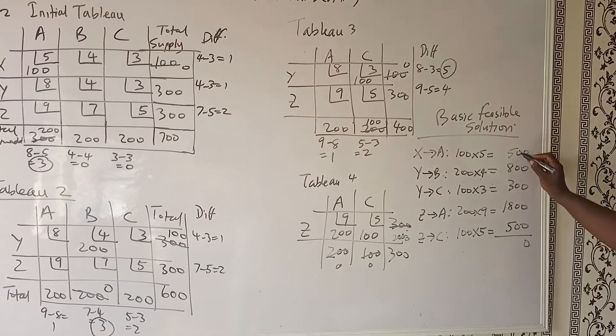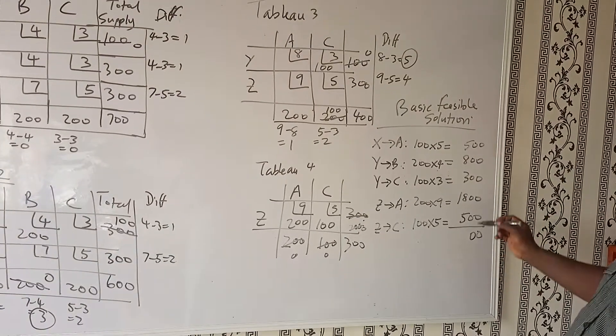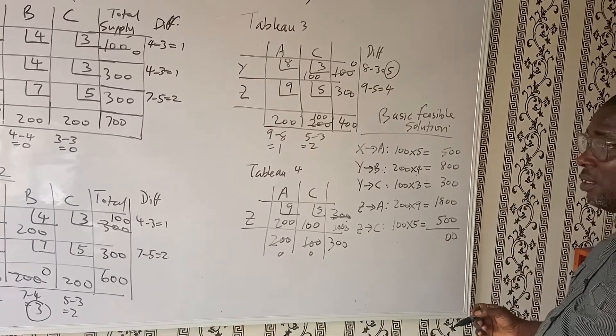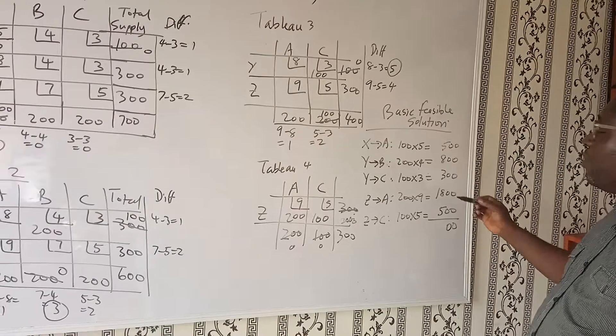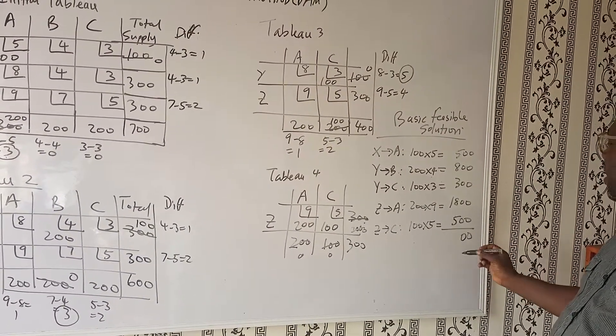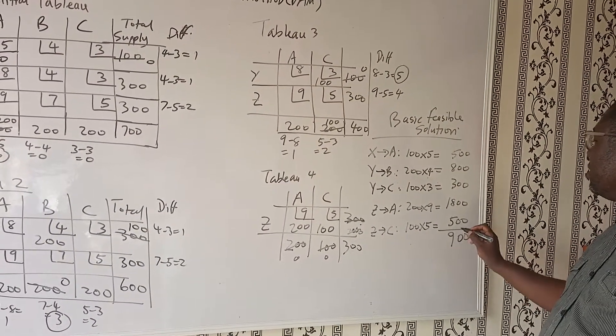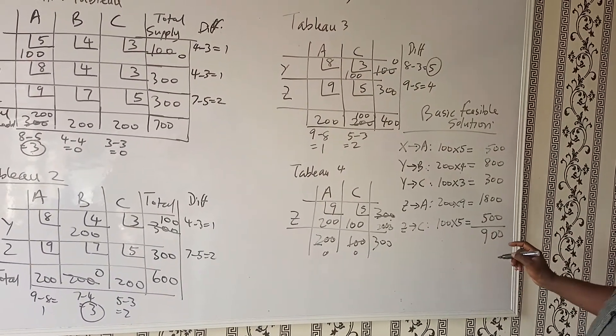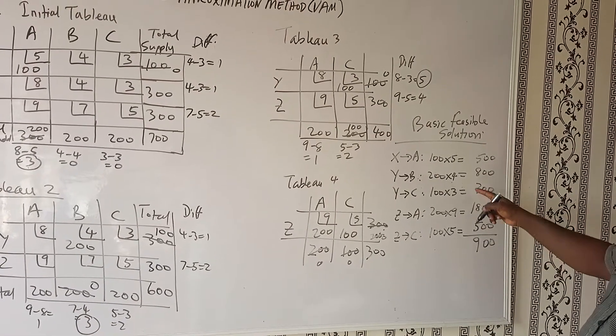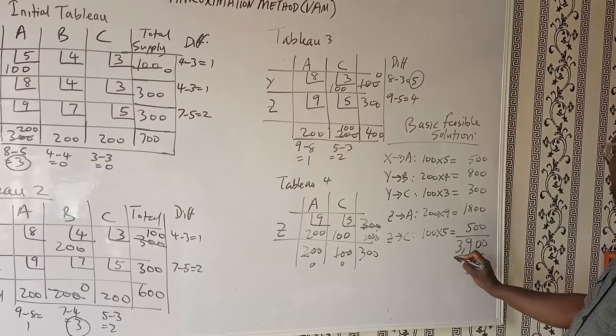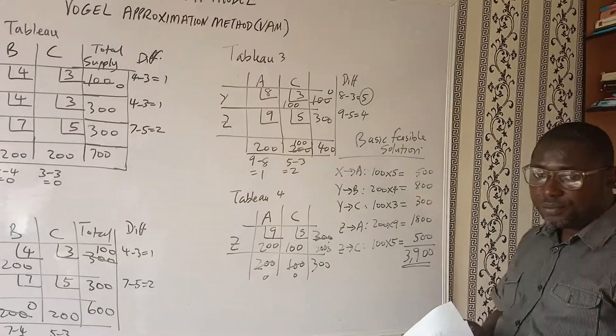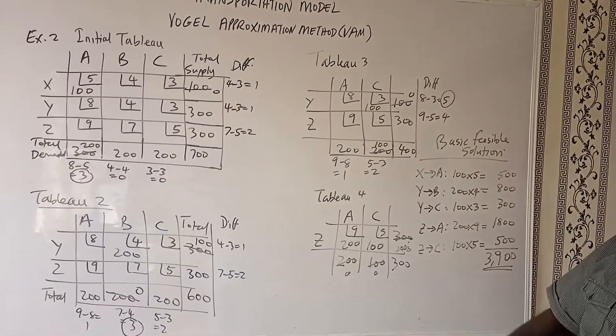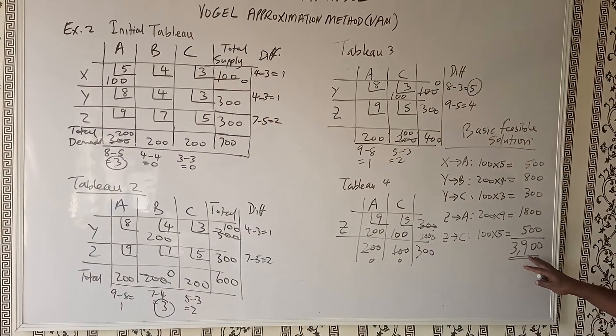Now let's find the solution to this quickly. So 100 times 5 gives us 500. And 200 times 4 gives us 800. 100 times 3 gives us 300. 200 times 9 gives us 1,800. And 100 times 5 gives us 500. So what we'll now do is we'll add up these values. This gives us 3,900. So the solution to this question gives us this value of 3,900.